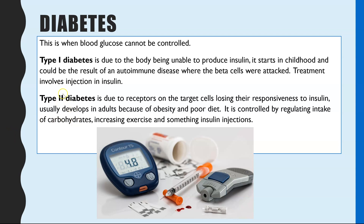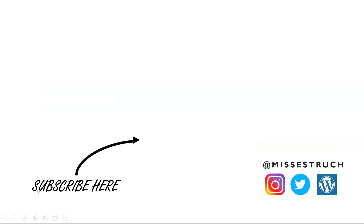An important exam tip for type 2 diabetes: when discussing how to control it, you must specifically say regulating carbohydrate intake, not just 'regulating your diet.' If you just say diet, you won't get the mark — you need to specify carbohydrates, because it is carbohydrates that increase glucose levels. That's it for controlling blood glucose levels — hope you found it helpful, and if you did, give it a thumbs up.